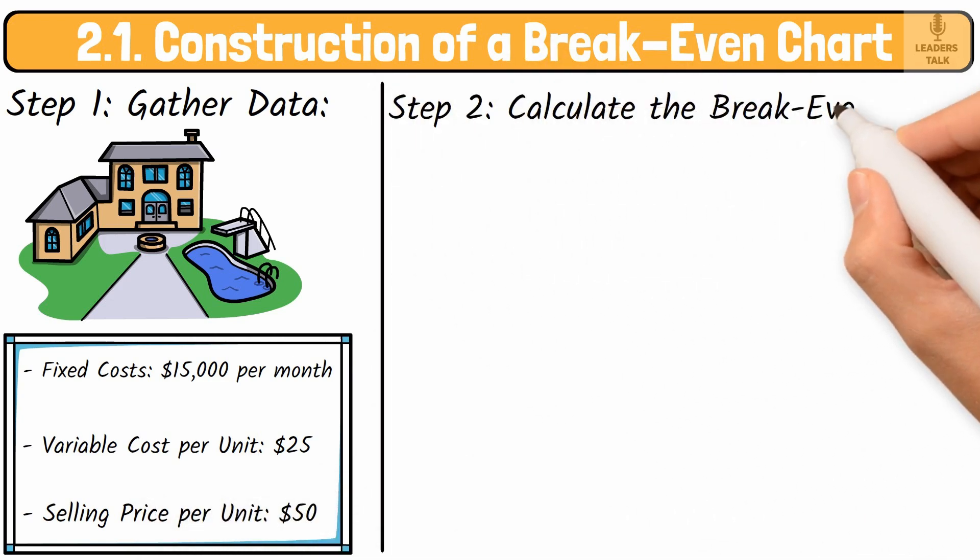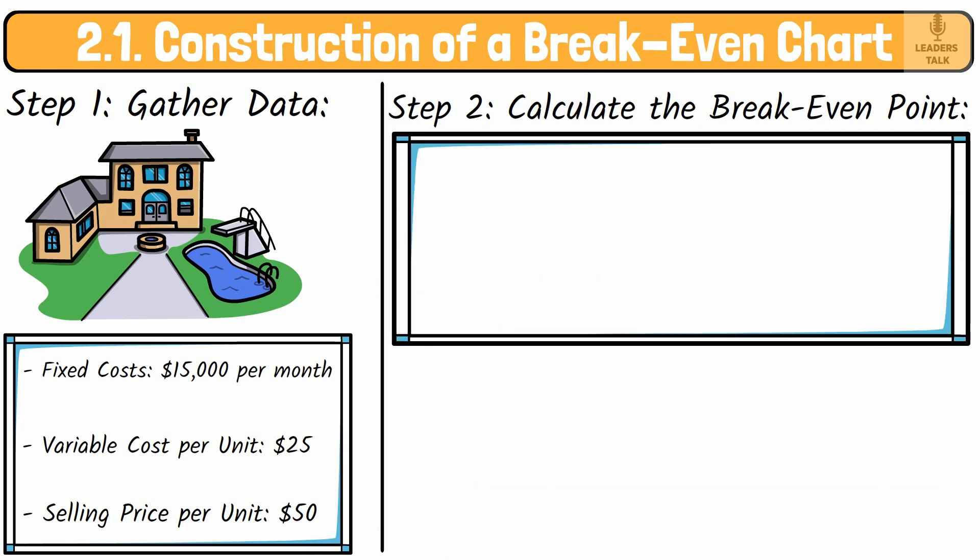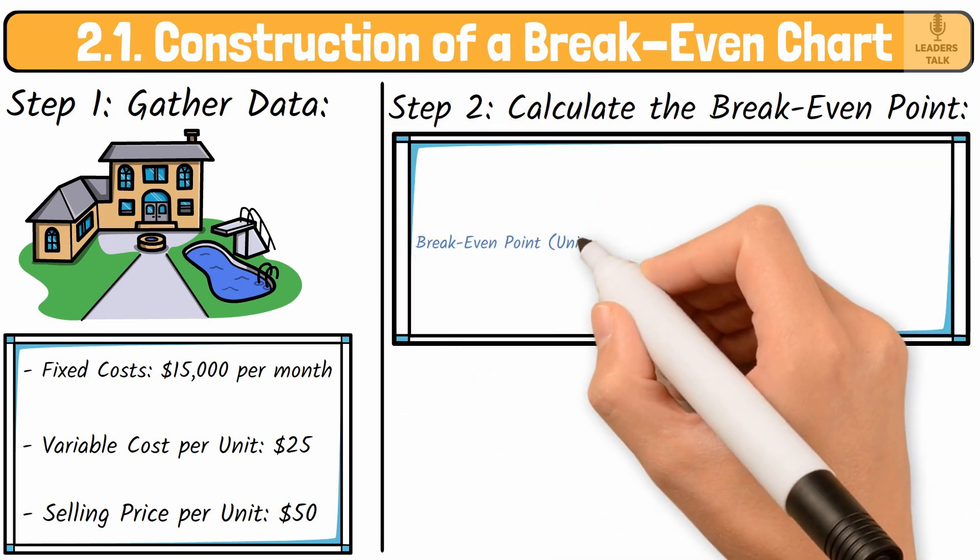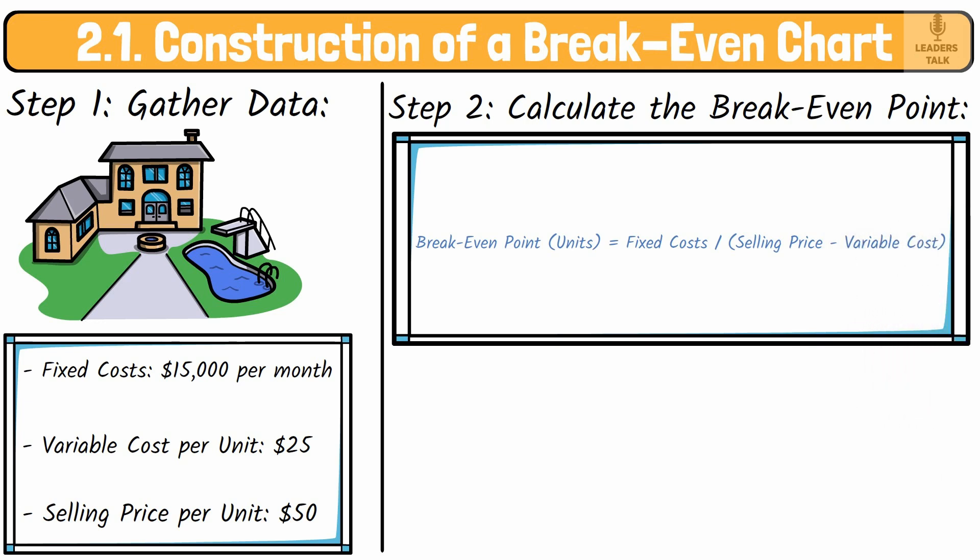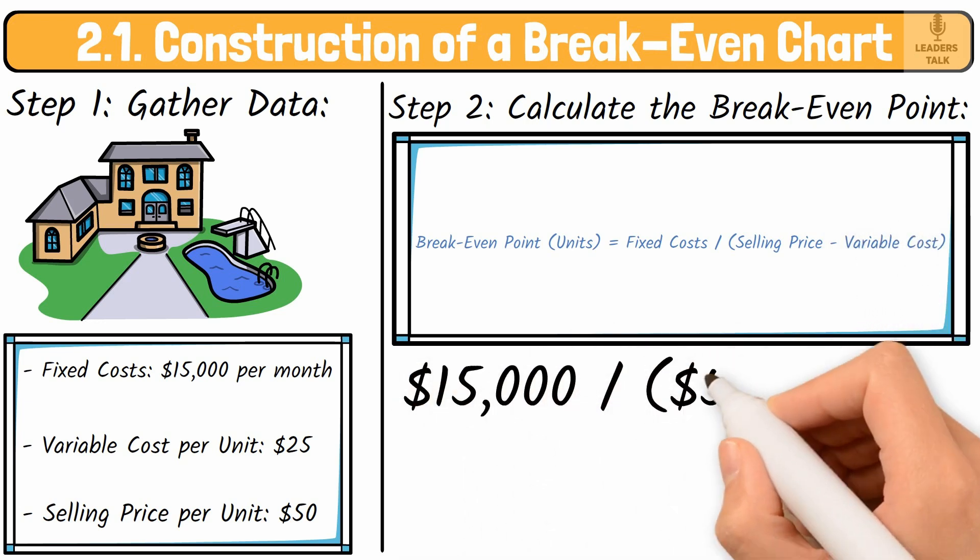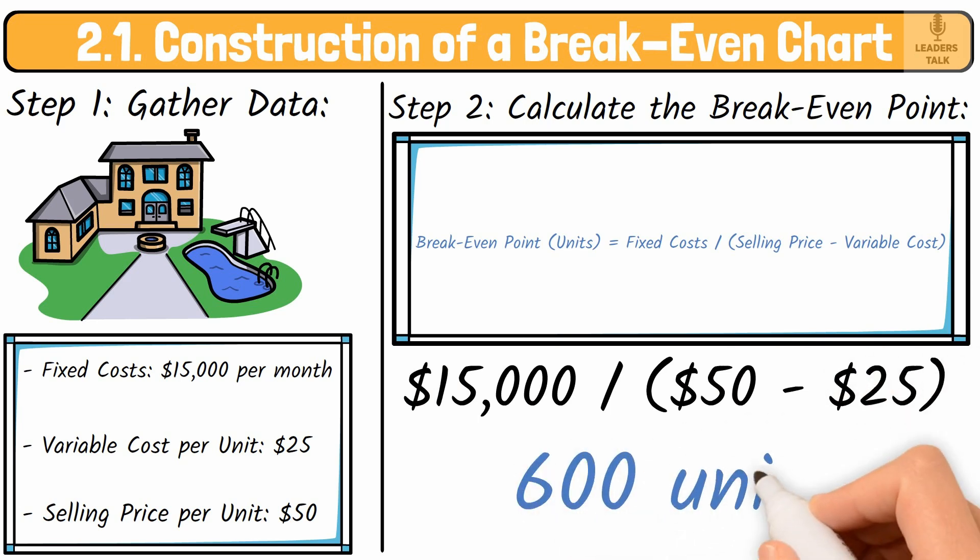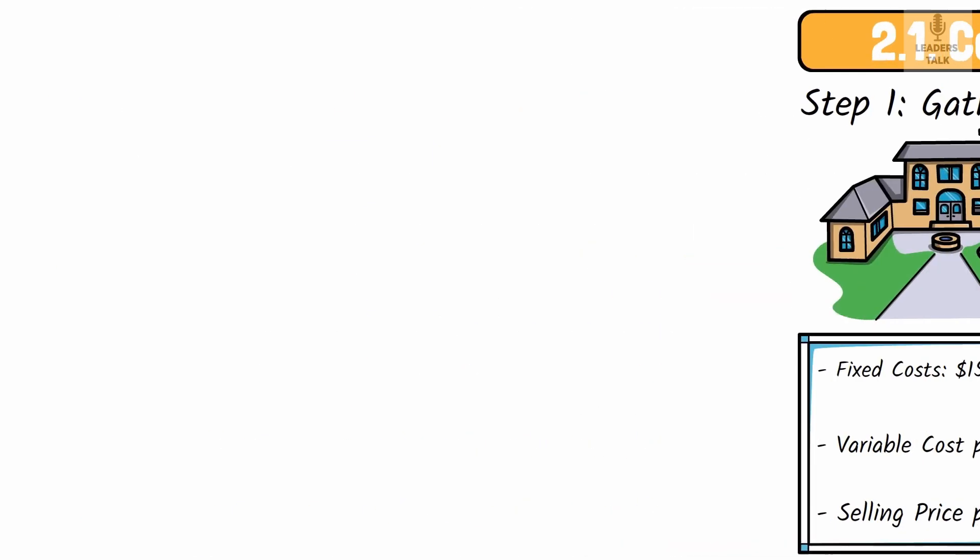Step 2: Calculate the breakeven point using the formula. Breakeven point units equal fixed costs divided by selling price minus variable cost, equal $15,000 divided by $50 minus $25 equals 600 units. You need to sell 600 units to break even.